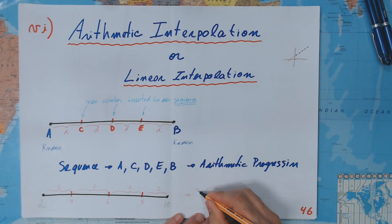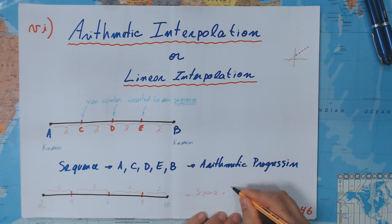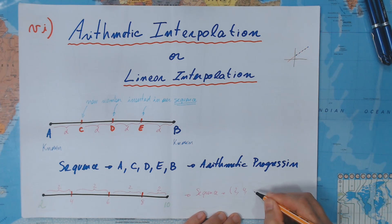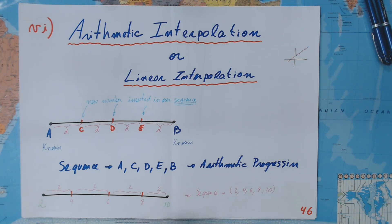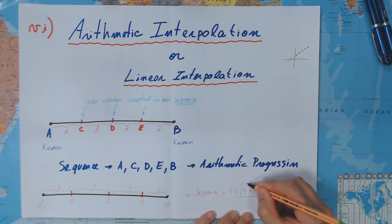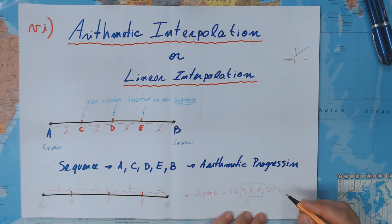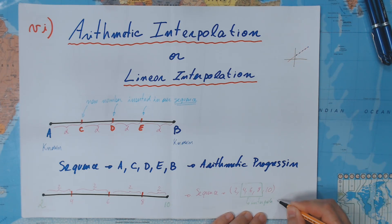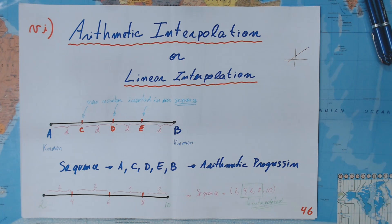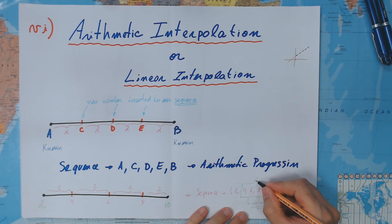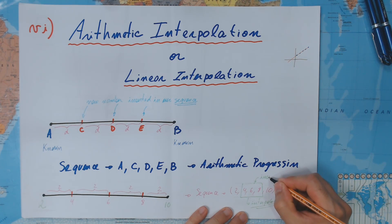So our sequence in this case would be: two, four, six, eight, ten. And those numbers in the middle — four, six, and eight — were interpolated. We just used an interpolation to insert them. They were not there; they were inserted.